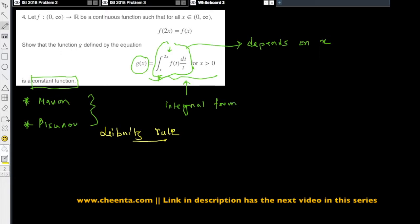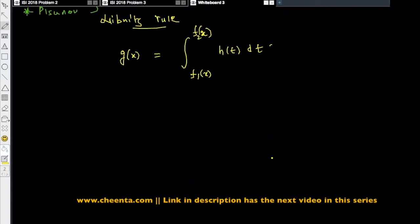It says that if a function g of x is defined as the integral from f1 of x to f2 of x of h(t) dt, so the lower limit and the upper limit are functions of x themselves, and if you want to take the derivative of g of x...